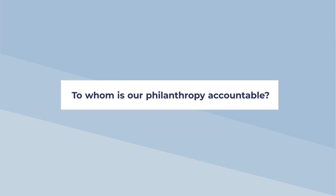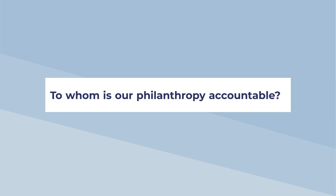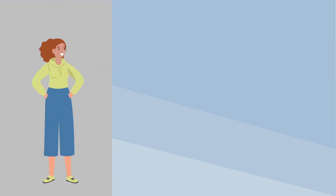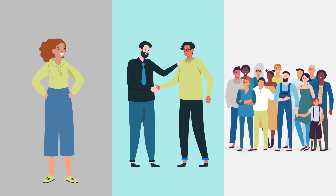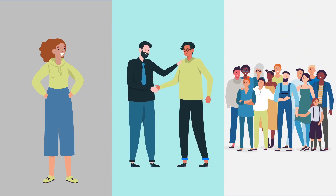Next, ask yourself: to whom is our philanthropy accountable? Think about accountability in broad terms that include your family, your partners, and your community. What are the expectations of your giving?